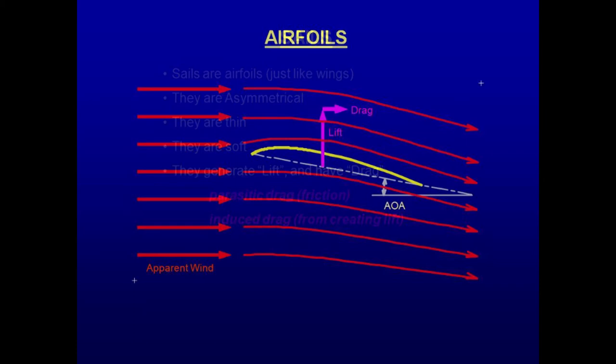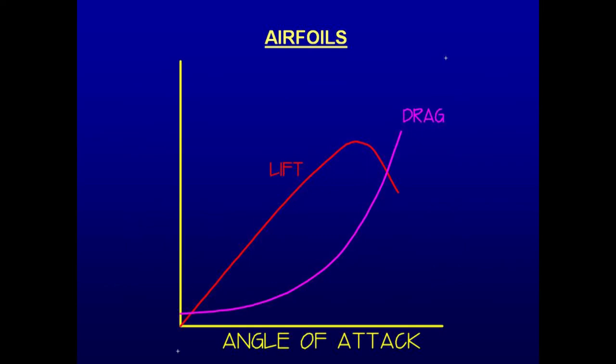Let's look at a cross-section of a sail that is positioned in a stream of continuously flowing air. If the sail is located in a wind tunnel, we can vary the angle of attack and measure the lift and drag forces. Here is a typical plot. As the angle of attack is increased, the lift also increases, up until the point that the sail stalls, and then lift decreases.